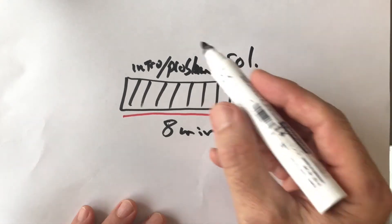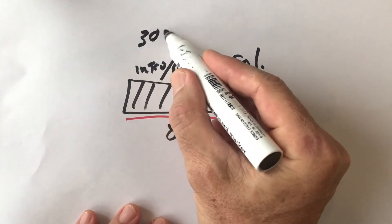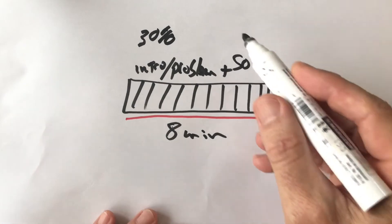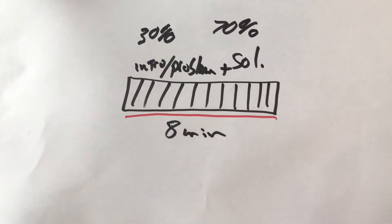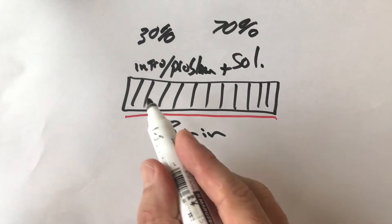And in terms of percentage wise, maybe 30% or 50% is the problem and then 70% is the solution that you talk about, but that doesn't matter. I mean, it can be 50-50, where you have to convince us that it actually is a problem. So these are your slides here.